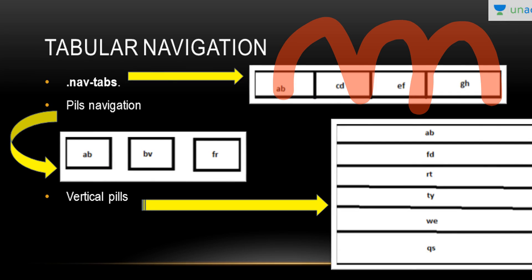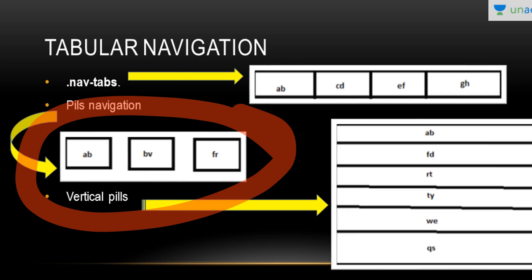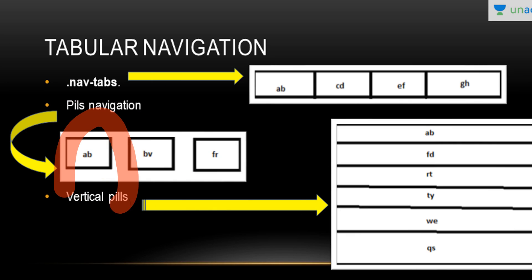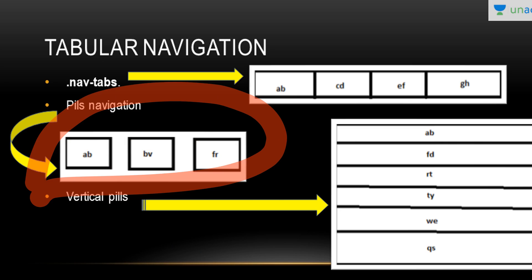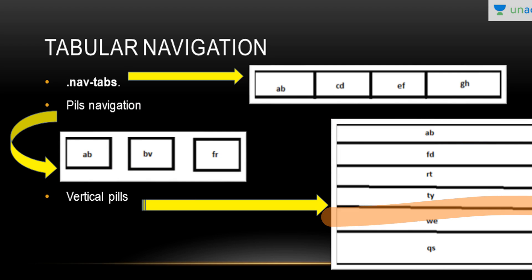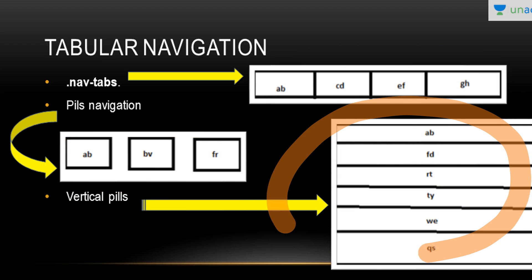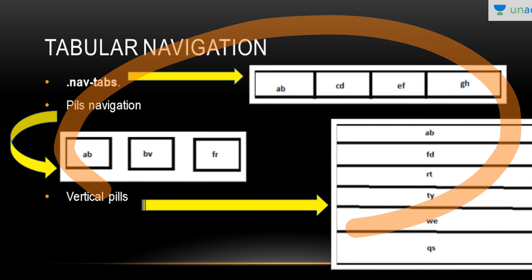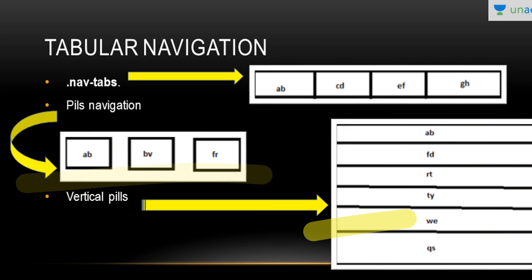Then we have pills navigation. To turn tabs into pills, you have to incorporate .nav-pills. Pills look like separate boxes — box one, box two, box three. So tabs appear one after the other inline, pills appear as separate boxes, and the third type is vertical pills, where the navigation is arranged vertically: 1, 2, 3, 4 going downward. These are the different ways you can give navigation to your webpage, and you can include any one of them.